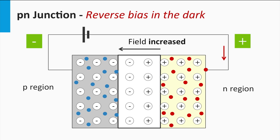If we apply a reverse bias on such a P-N junction in the dark, the depletion zone gets wider, the diffusion of majority charge carriers is suppressed, and only an extremely small current related to drift of minority charge carriers is generated.